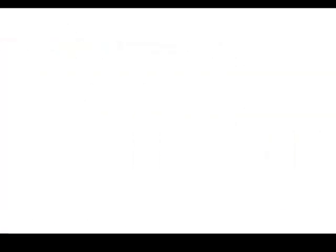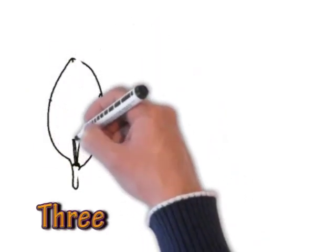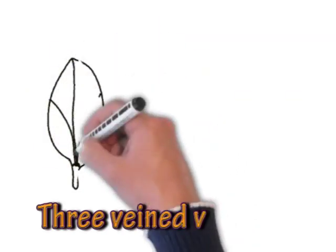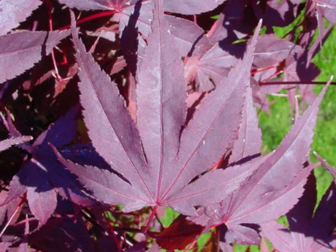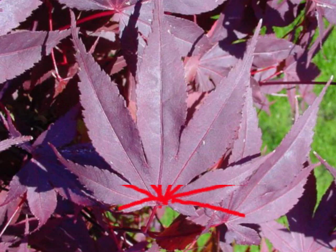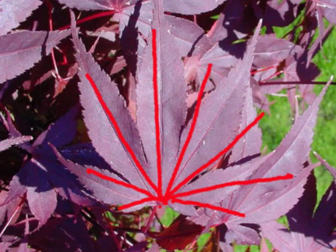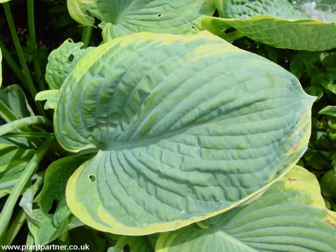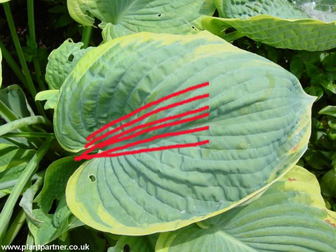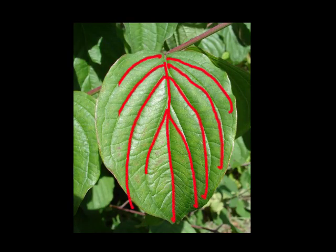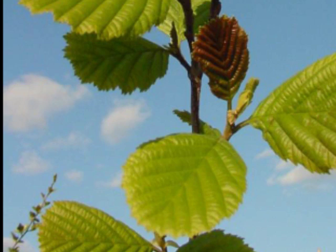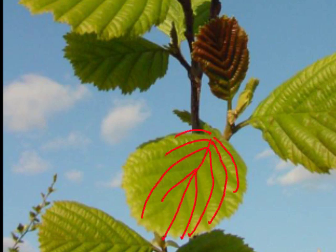Most dicotyledonous plants have branched or reticulate veins. Then we have three-veined — like this Viburnum davidii, which has three strong veins. Here's an Acer and you can see that's got palmate veins. The Hosta, of course, has parallel veins and the Cornus has pinnate veins. And there's an Alder — again, you can see that's got pinnate veins.